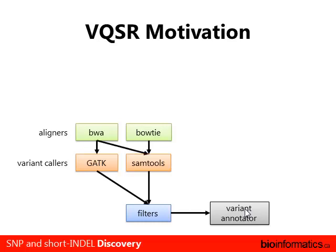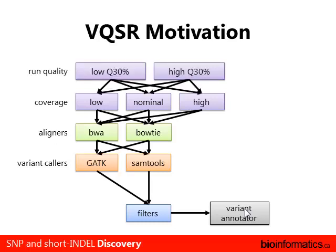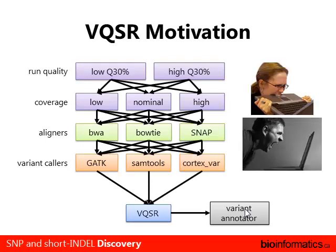It gets even more complex when you consider mixing aligners with variant callers (e.g., Bowtie with GATK, or BWA with SAMtools), different coverage levels (exome, low coverage, 30x genomic resequencing), and run quality differences — such as a new lab technician producing low Q30 data versus an experienced technician producing pristine runs. Each of these scenarios may require different filter settings, and adding more aligners and variant callers just leads to an unmanageable number of filter combinations.